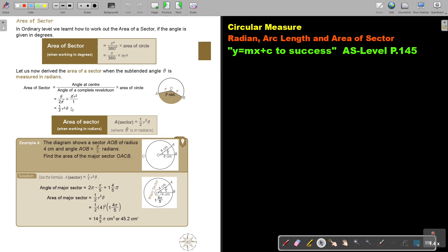So it's a bit more complicated. The formula is a half r squared theta, and the angle must be in radians. So let's look at an example.